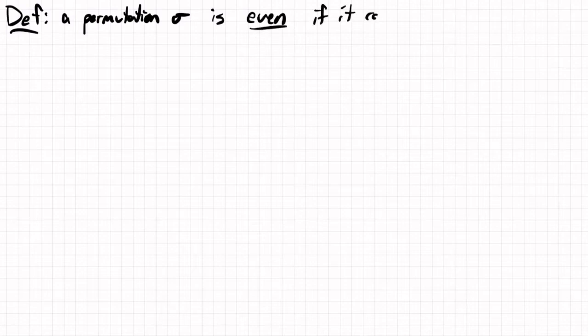So let's talk about even and odd permutations. We have the following definitions. Permutation sigma is even if it can be written as a product of an even number of two-cycles.